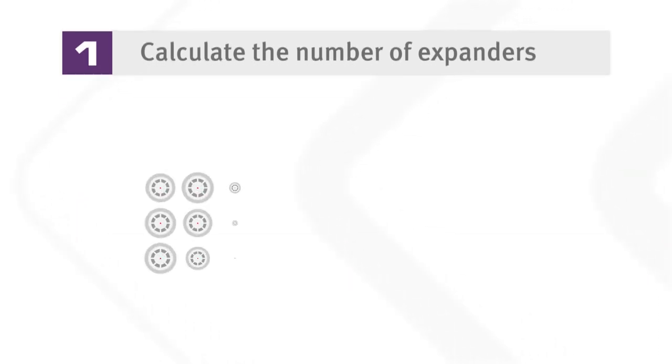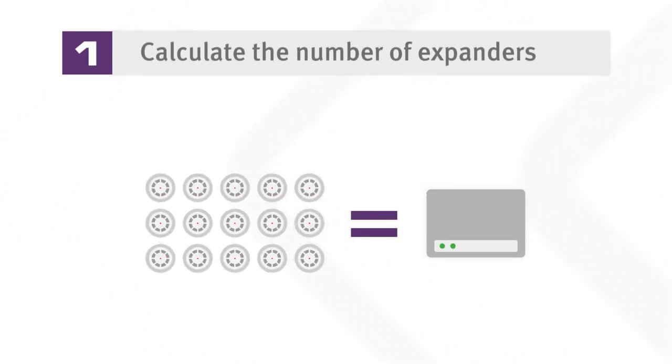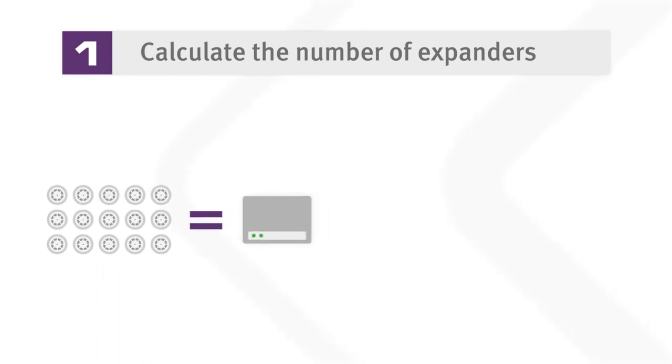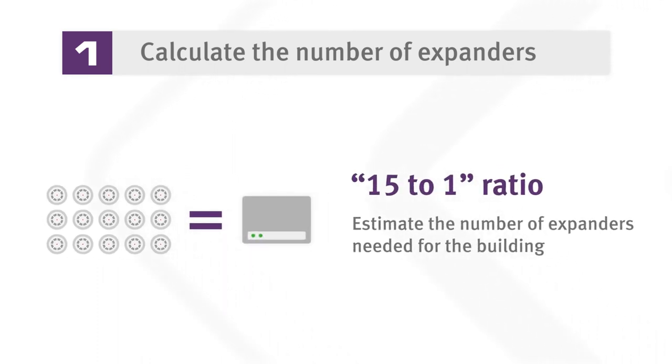On average, the system needs one expander for every 15 sensors. You can use this ratio to get a quick estimate of the number of expanders needed for the building.